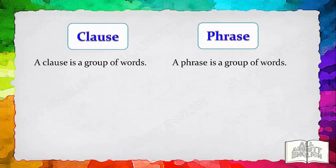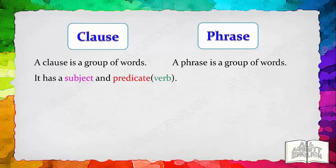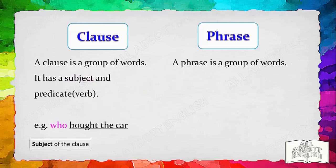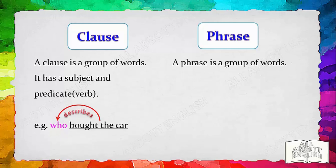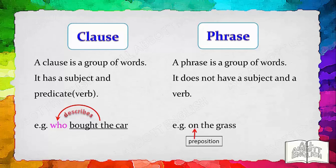We shall focus on groups of words which make up a phrase or a clause — they often come between the subject and its verb. A clause has a subject and a predicate. A predicate is the part of a sentence that contains the verb and gives information about the subject. For example, 'who bought the car': 'who' is a relative pronoun and the subject of the clause; 'bought the car' is the predicate. A phrase is also a group of words, but it does not contain a subject and a verb — for example, 'on the grass': 'on' is a preposition and 'grass' is the noun, but there is no verb.